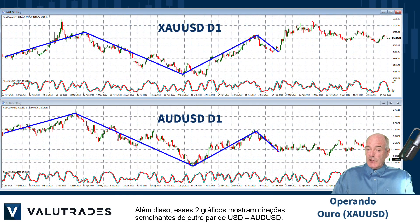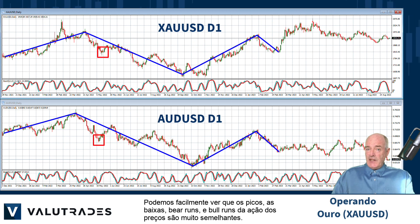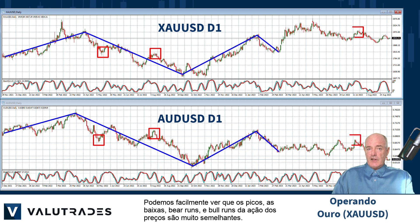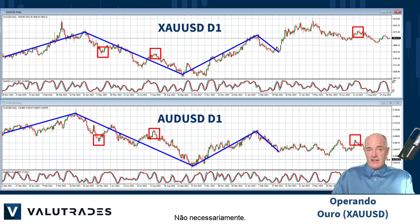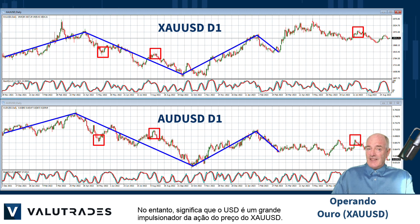Also, these two charts show similar directions of another pair, Aussie dollar. We can easily see that the peaks, troughs, bear runs, and bull runs of price action are very similar. Does this mean that the price of gold and the Australian dollar are correlated? Not necessarily. It does however mean that the US dollar is a big driver of the price action for XAU/USD.